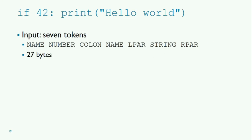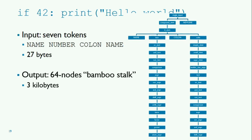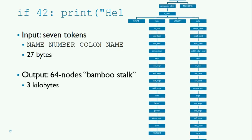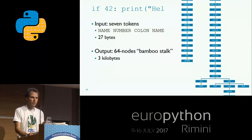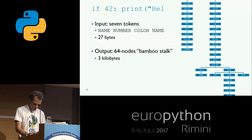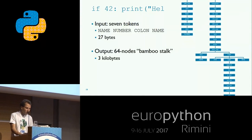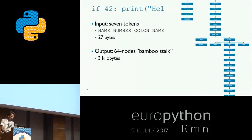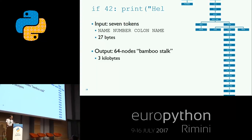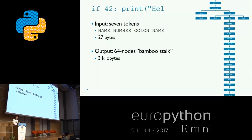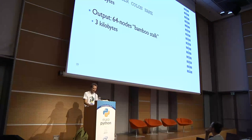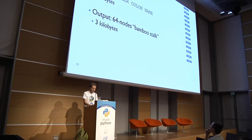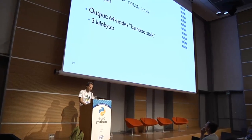So what has just happened? We had a program which was 27 bytes long, tokenized into seven tokens. The resulting parse tree has 64 nodes — it takes a hundred times as much memory as the source code itself. And it's not so much a tree as a bamboo stalk because it almost doesn't branch; we have a huge series of a dozen nodes with a single child each. This is because Python has a rather primitive parser which defines grammar this way. Well, it works.